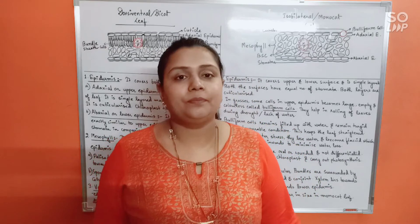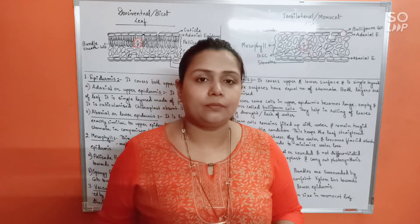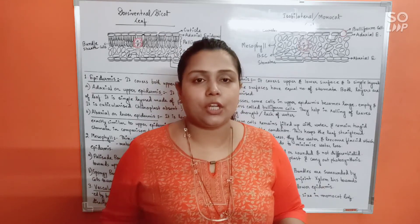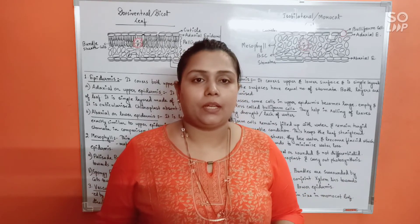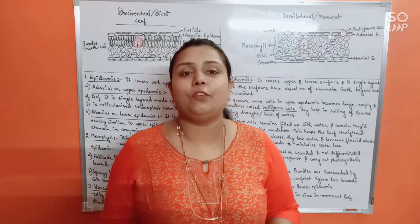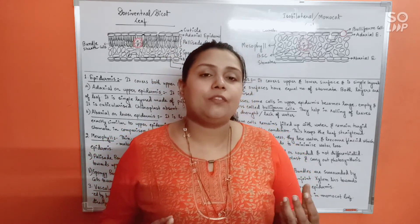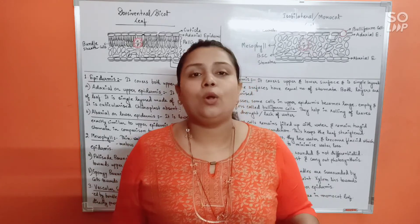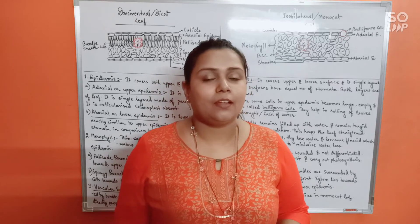Why are all vascular bundles similar in size? In monocot leaves, the venation is parallel — all veins are similar, not thick or thin differentially. Therefore, all veins contain similarly sized vascular bundles. In contrast, in the dicot leaf, veins vary in thickness, so the vascular bundles also vary in size. In the monocot leaf, because all veins are similar in thickness, all vascular bundles are also similar in size.